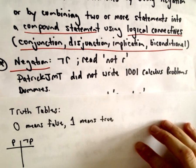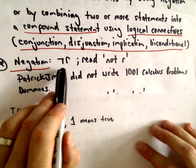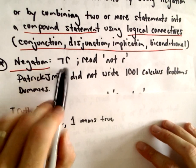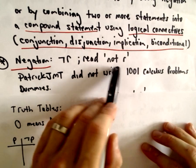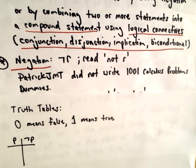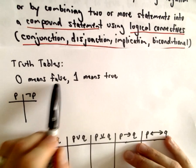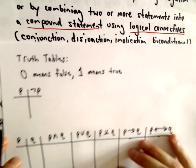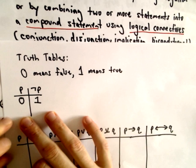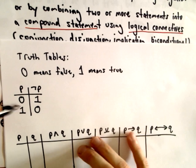Let's talk about negation. The negation symbol is almost like a sideways L. For the statement r, we would read the negation as 'not r.' My statement r said 'Patrick JMT wrote 1001 Calculus Problems for Dummies,' so not r would read 'Patrick JMT did not write 1001 Calculus Problems for Dummies.' For truth tables, we let 0 denote false and 1 mean true. If p was false, the negation is true; if p was true, its negation is false.